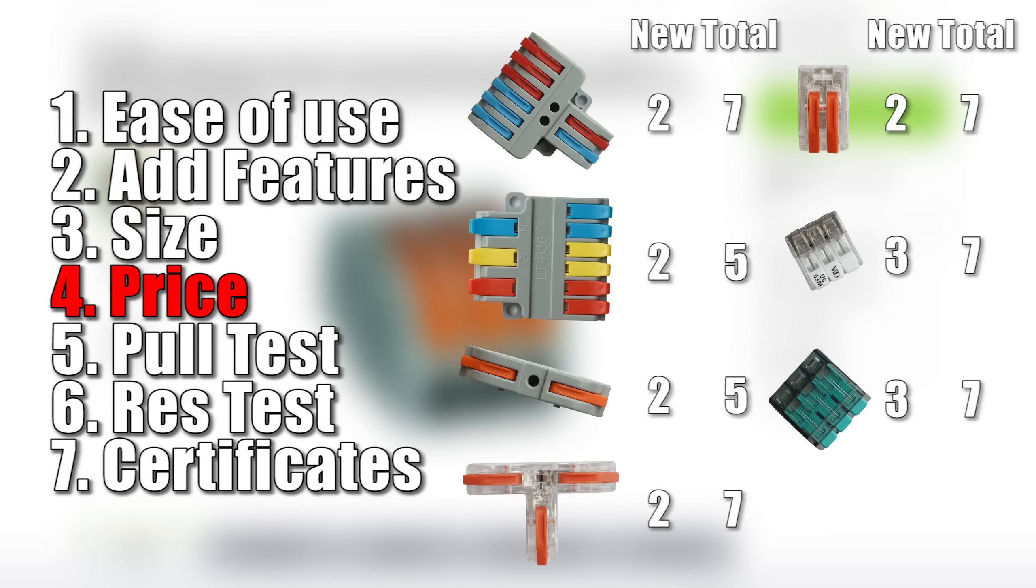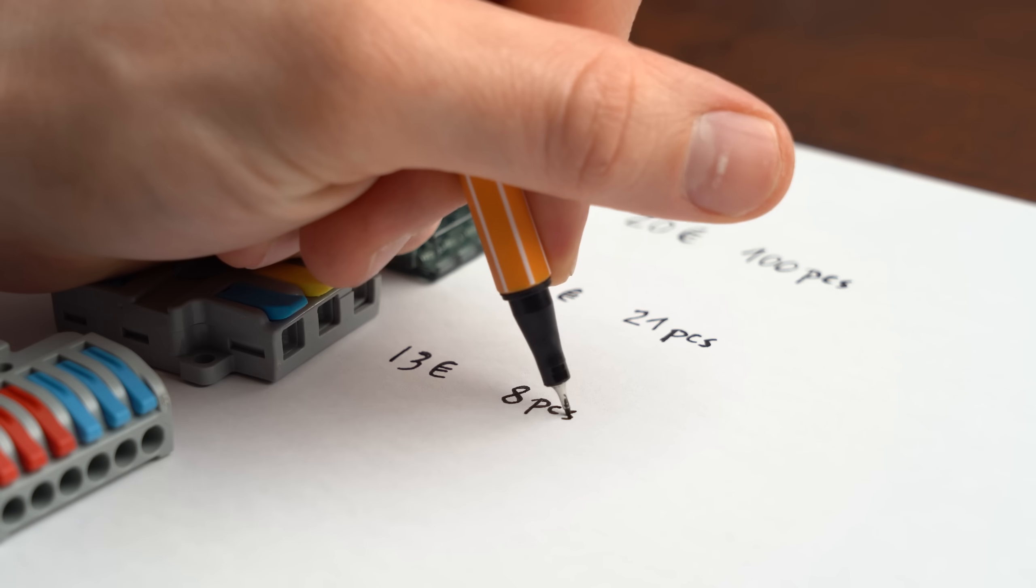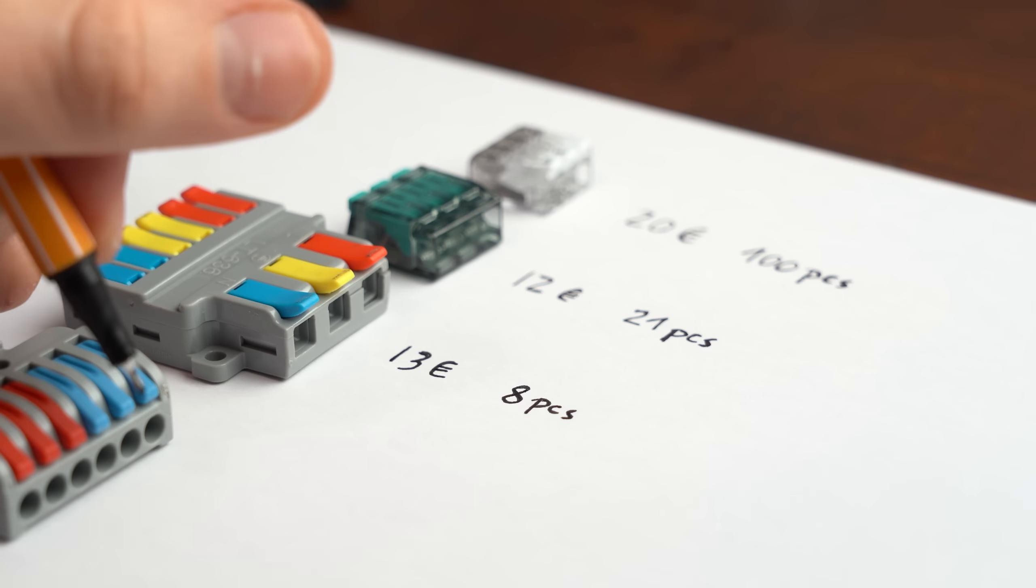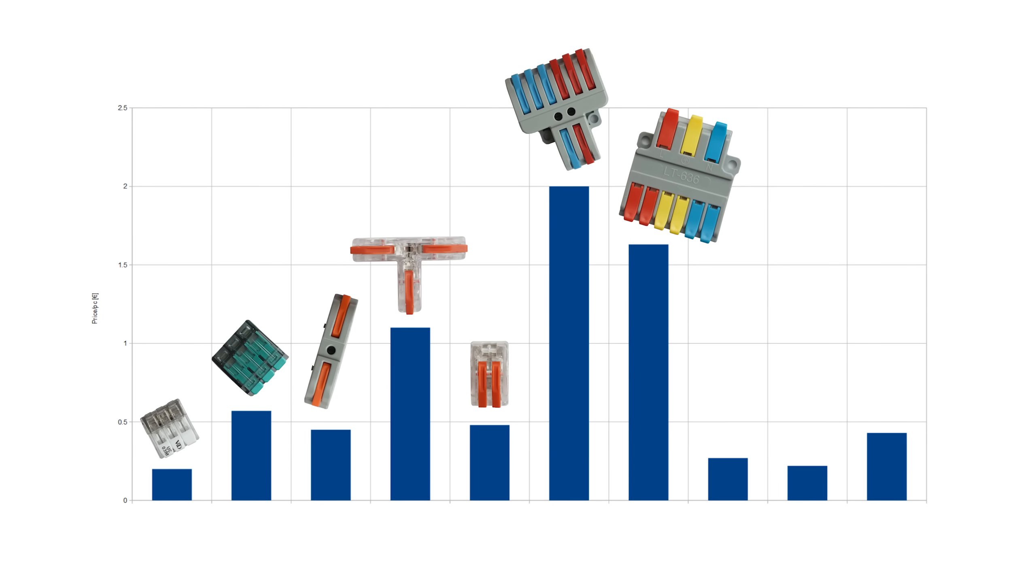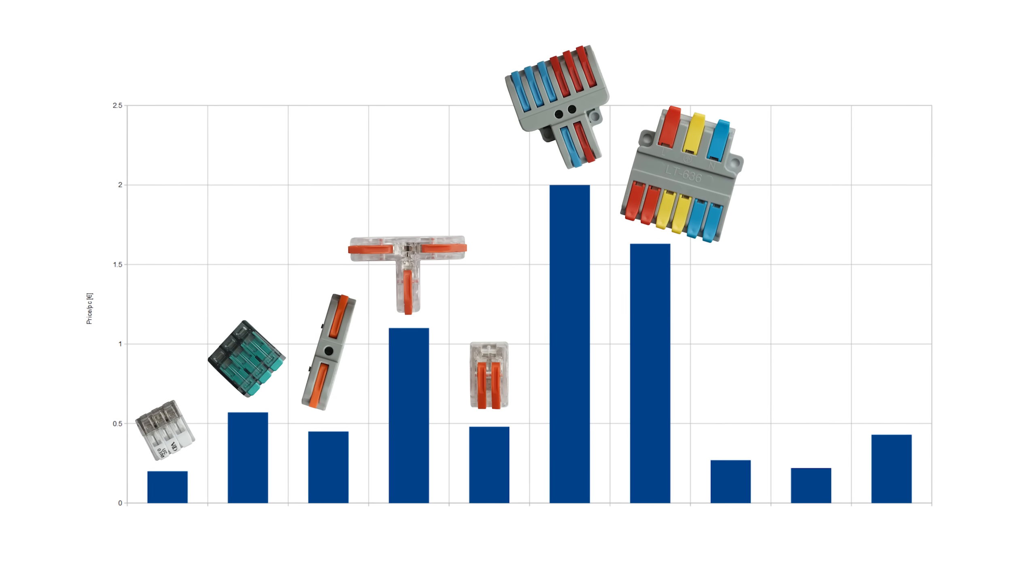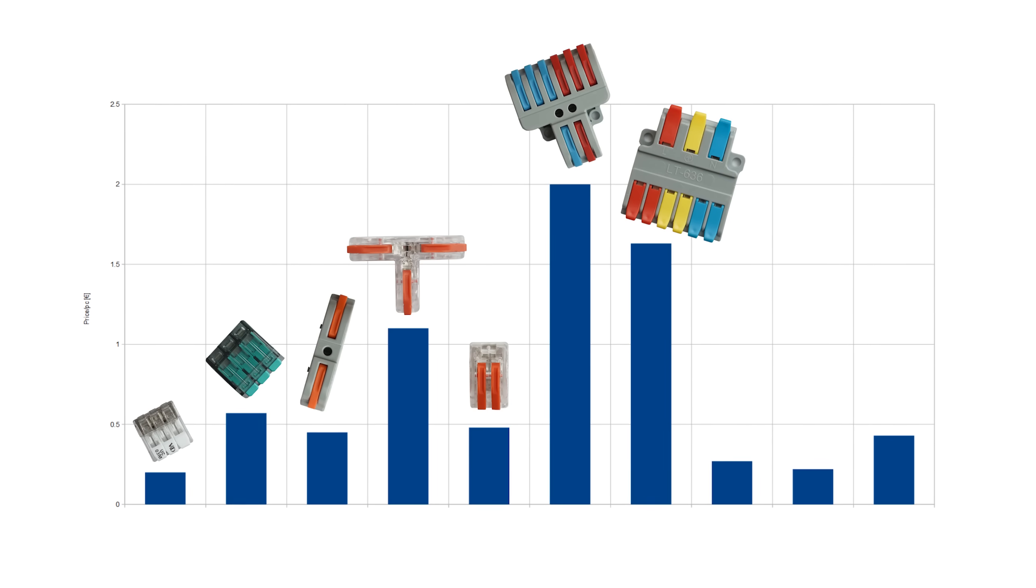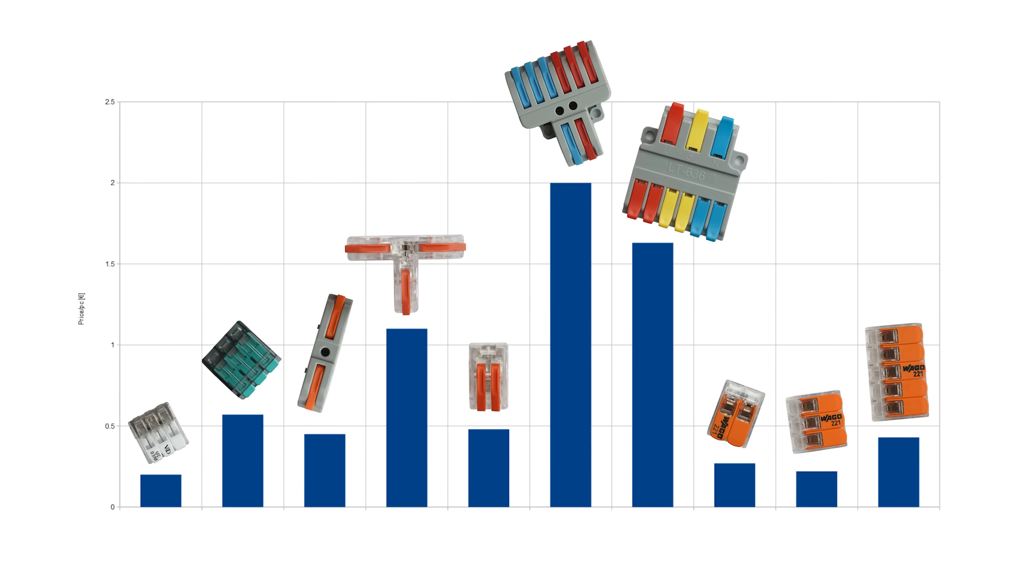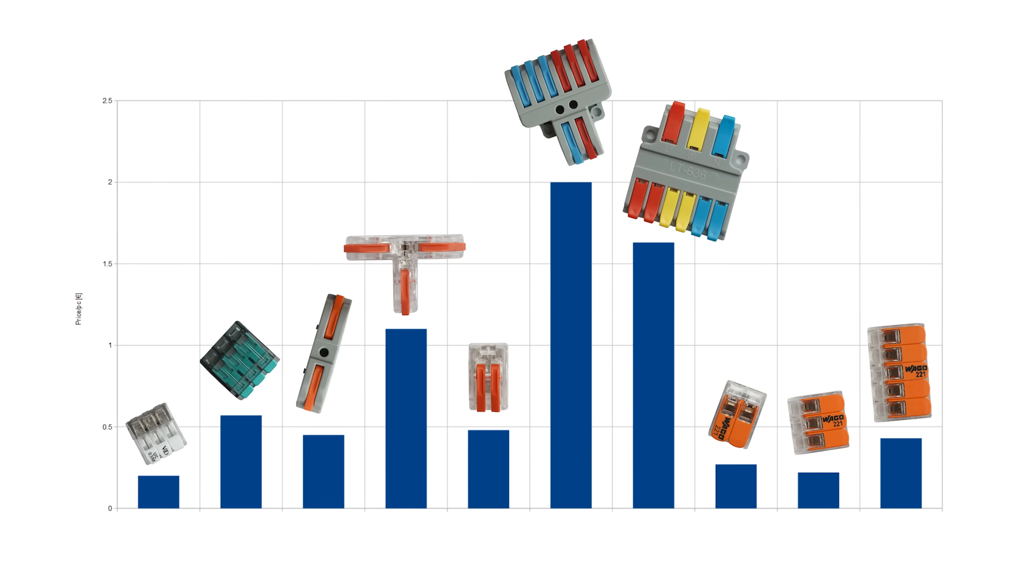That means it was next finally time for the very interesting price point comparison, which after doing a bit of research was actually a surprise for me. If we go by the price per piece ratio, then the VID connector is the clear winner here. But what is so surprising is that even genuine 2, 3, or 5 pole WAGOs are cheaper than most of the knockoffs.